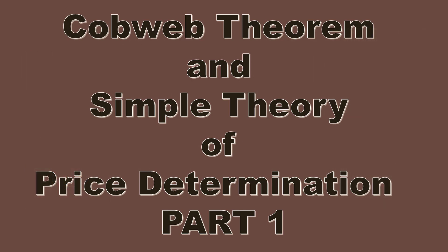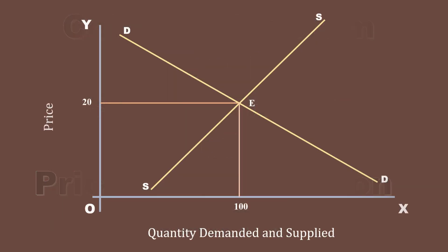Cobb-Webb Theorem and Simple Theory of Price Determination Part 1. In this lesson, let us try to understand the Cobb-Webb model by observing how a market moves from disequilibrium to equilibrium, or from instability to stability. Already we have studied the same phenomenon using the static approach. A quick glance of it will do a lot good to us.